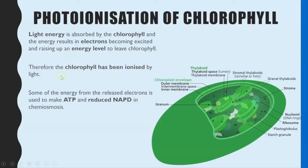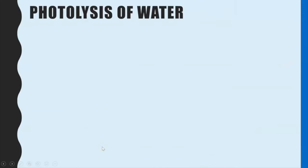That is why the chlorophyll has been ionized — it's lost an electron due to the energy gained from absorbing the light energy. The energy from the electrons that have been released goes towards making ATP and also reduced NADP.